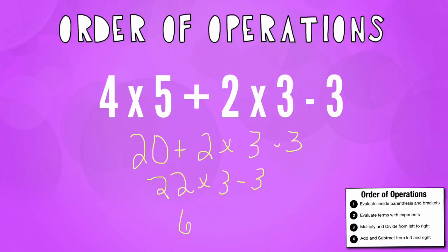22 times 3 is 66 minus 3 and we get the answer of 63, which is much different than our original answer.